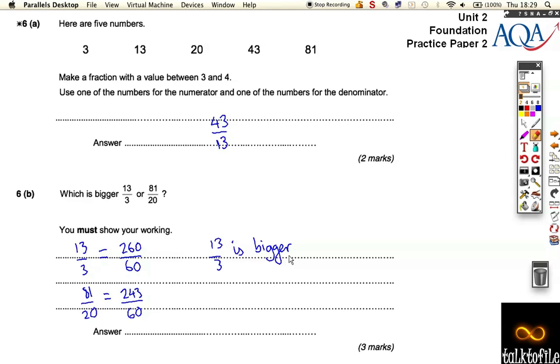We could look at doing a different method. We could have converted 13 over 3 into a mixed number. So that goes into 4 and one third, because there's 3, 6, 9, 12, that's 4 plus 1 left over is one third.